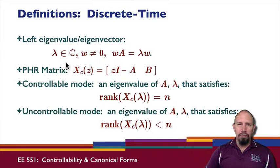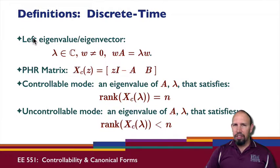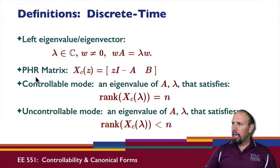I'm going to define a number of things. First, we have a left eigenvalue and eigenvector. The eigenvalue is not really right or left — it's just a scalar value, but the vector is a left vector, meaning it multiplies the matrix on the left. The vector itself cannot be zero. We have the PHR matrix X subscript C of Z given by this expression.